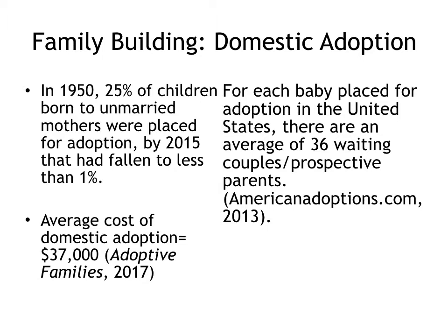Contrary to the common belief that adoption is an easy process or that there are many waiting infants looking to be matched with adoptive parents, there is actually a significant shortage of adoptable infants in the United States. Some of this may have to do with increased access to family planning technologies like contraception or birth control, as well as the increased availability of abortion since the 1970s. But much of it has to do simply with the fact that giving birth outside of marriage has become less stigmatized, and so more women who do give birth outside of marriage will ultimately opt to parent their children themselves.